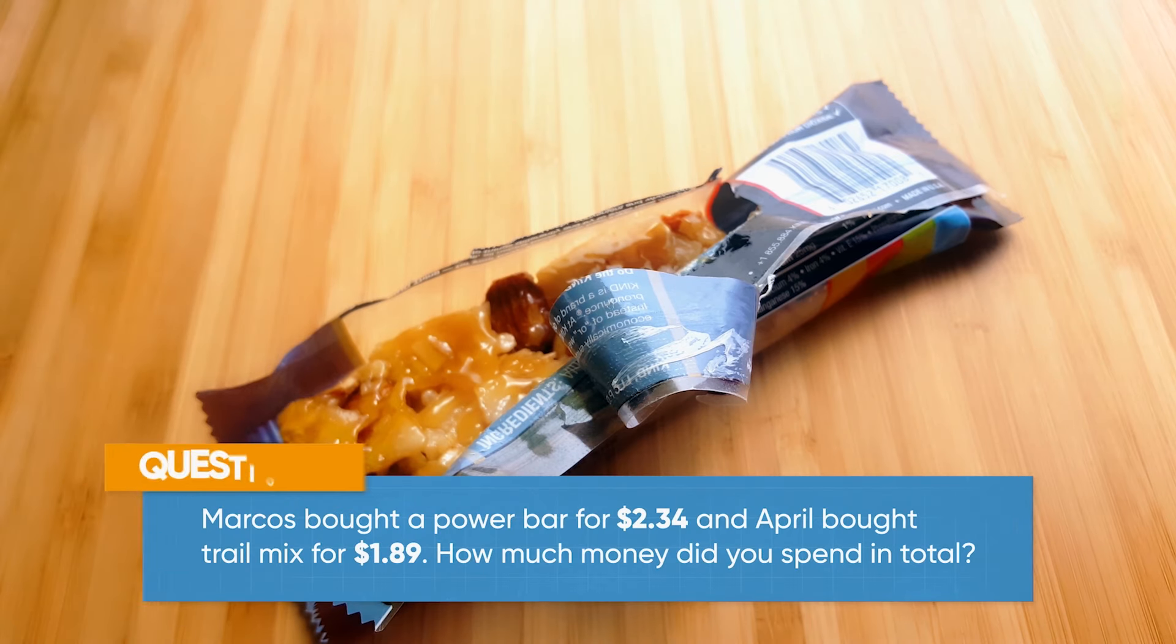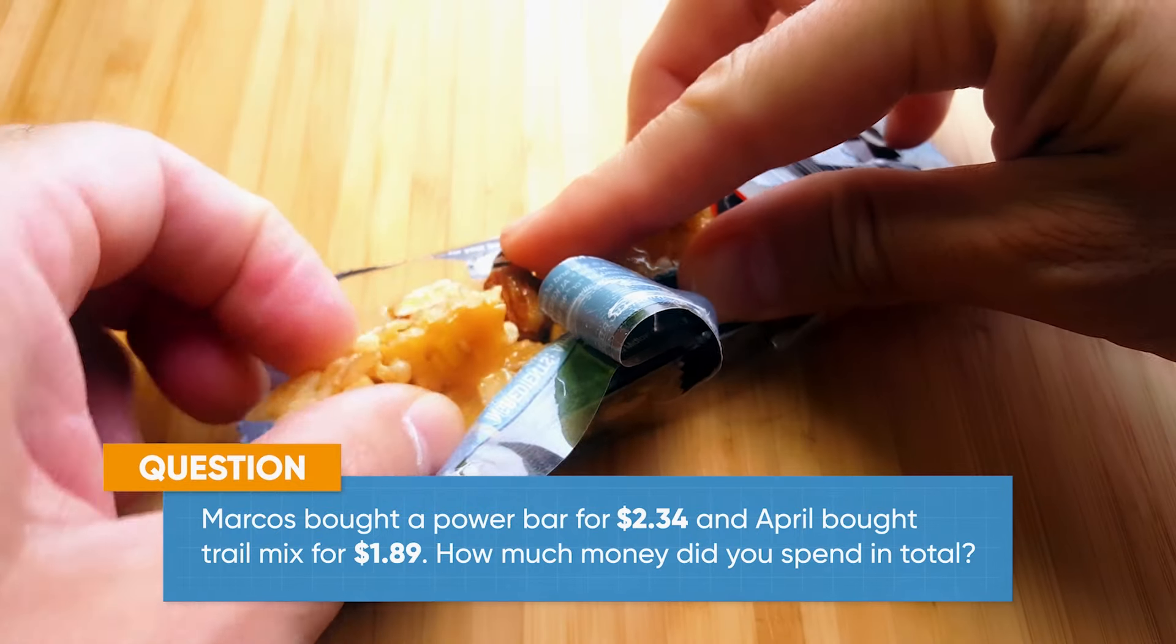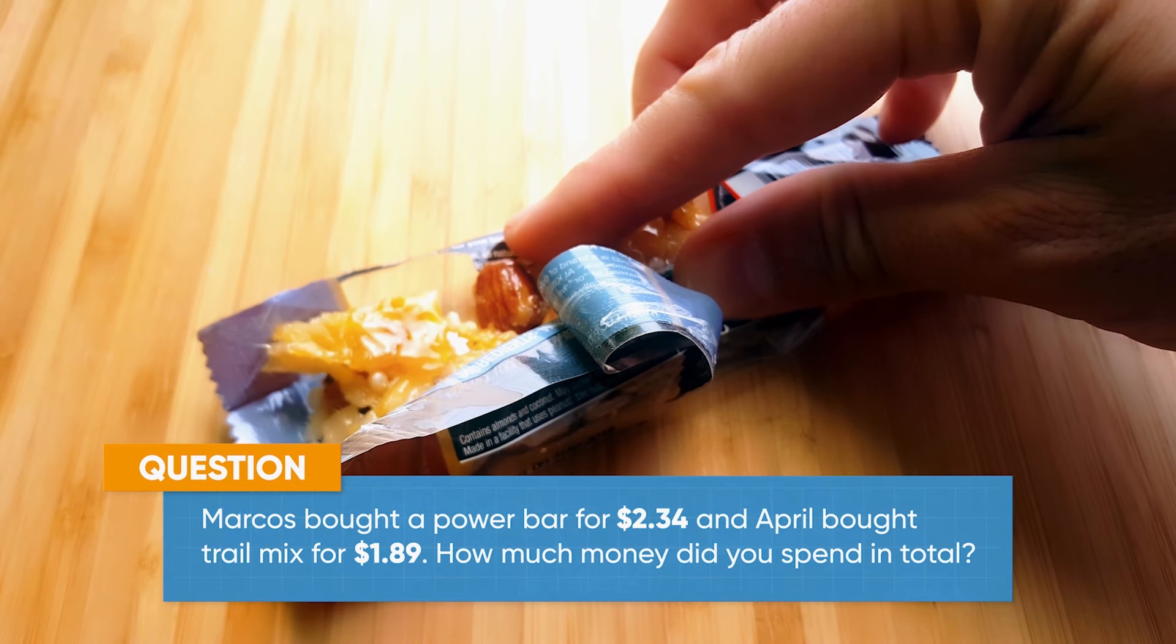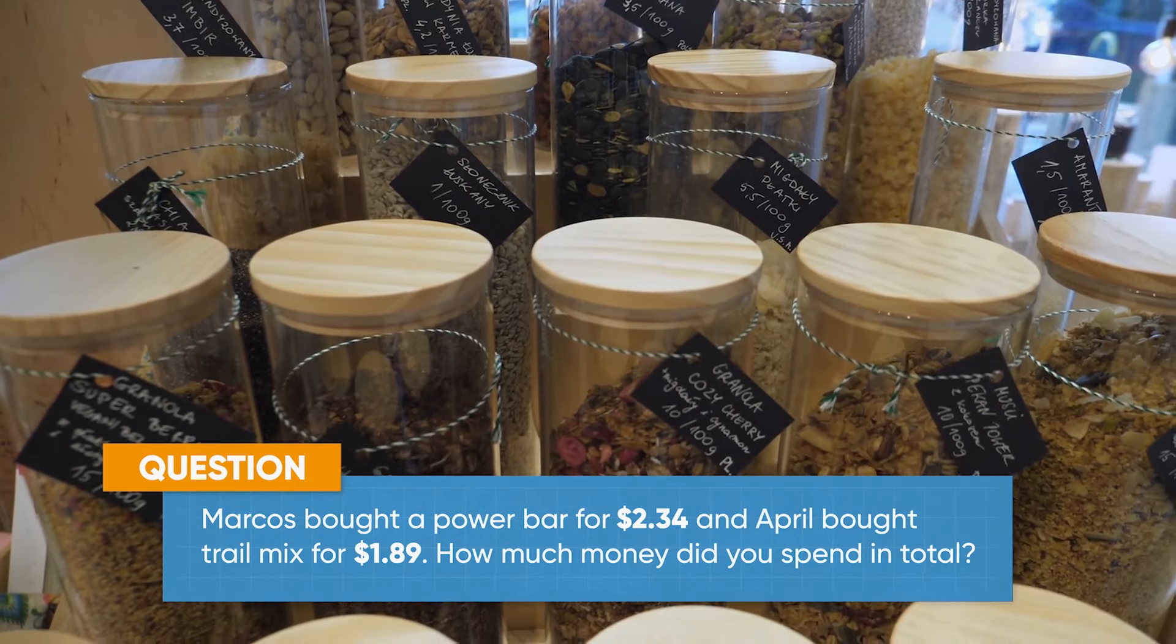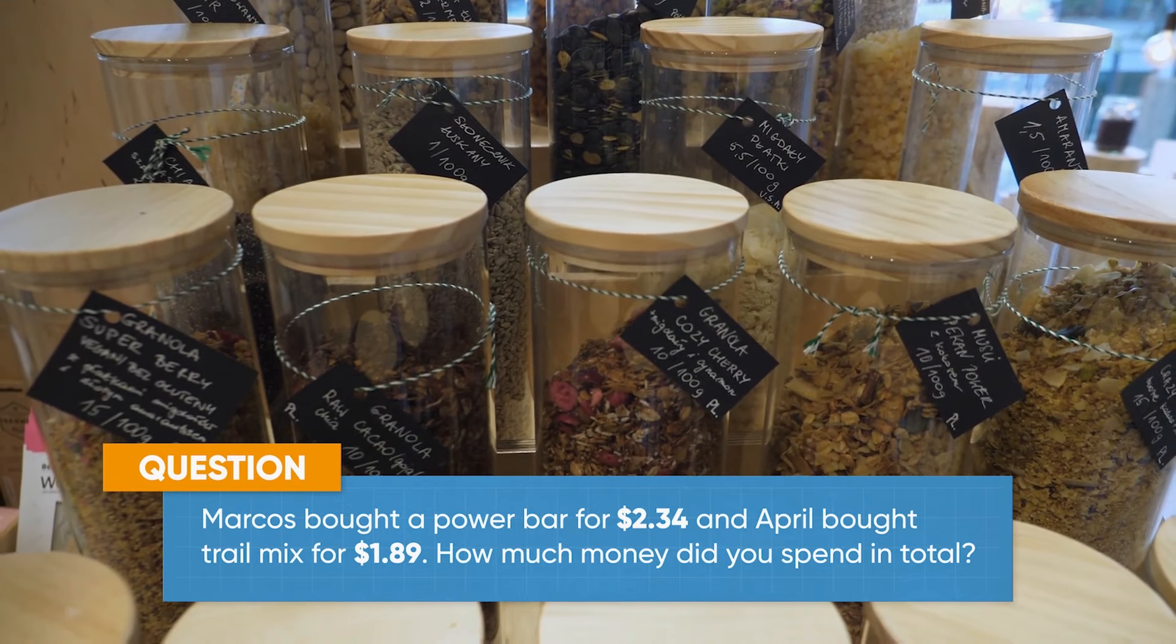Before our hike, we went to the store to buy a snack. Marcos bought a power bar for $2.34, and April bought trail mix for $1.89. How much money did you spend in total?